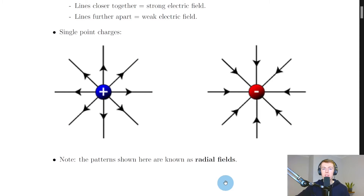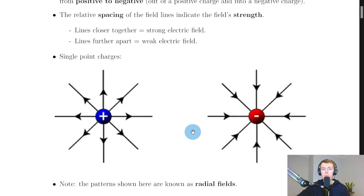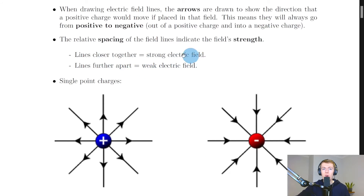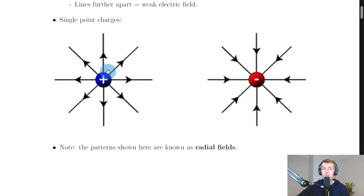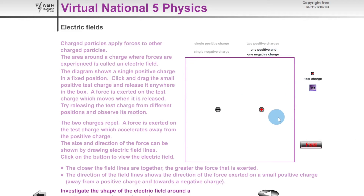Looking at the notes, for the single positive charge we have the circular radial pattern with field lines going outward, and for the single negative charge the circular pattern with lines going inward. Where the lines are closest together — nearest the charge — we have a strong electric field, and further away the lines spread out, indicating a weaker electric field. This applies to both single charges.